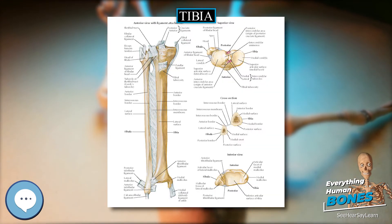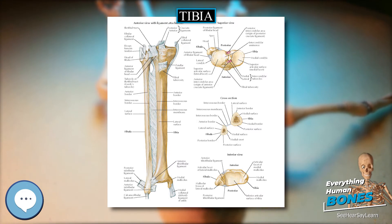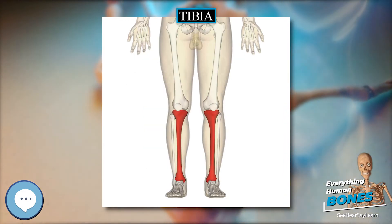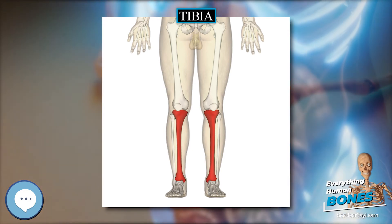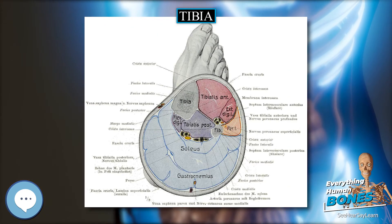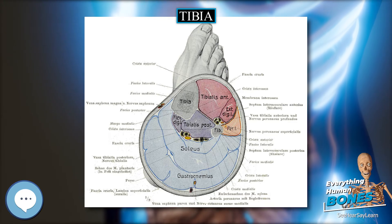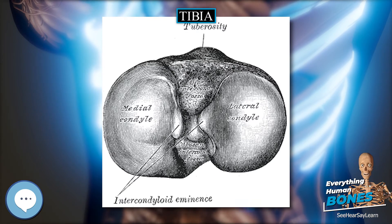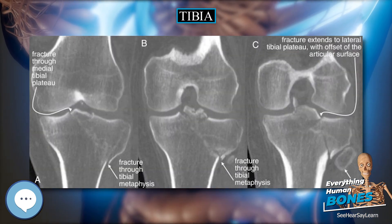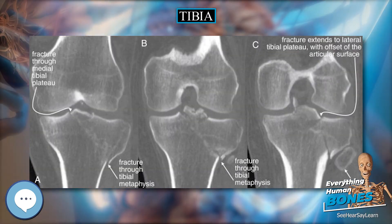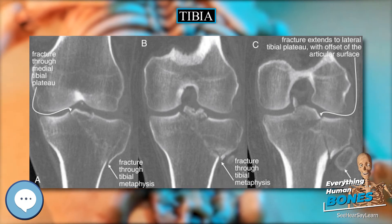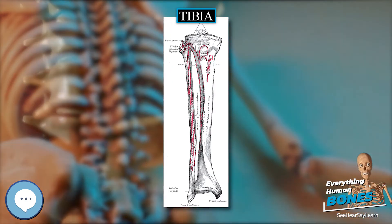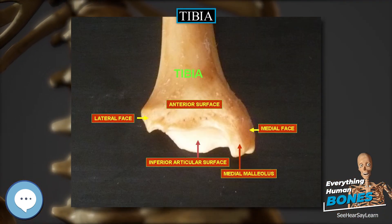The lateral surface presents a triangular rough depression for the attachment of the inferior interosseous ligament connecting it with the fibula; the lower part of this depression is smooth, covered with cartilage in the fresh state, and articulates with the fibula. The surface is bounded by two prominent borders, the anterior and posterior caliculi, continuous above with the interosseous crest; they afford attachment to the anterior and posterior ligaments of the lateral malleolus. The medial surface — see medial malleolus for details.